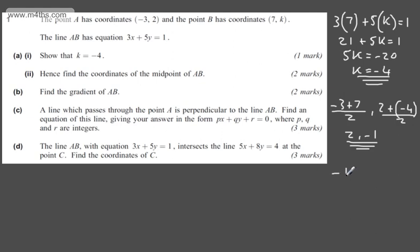So I'll have -4, that's the value of k, minus 2 over 7 minus -3. That's going to give me, in the numerator, -6.